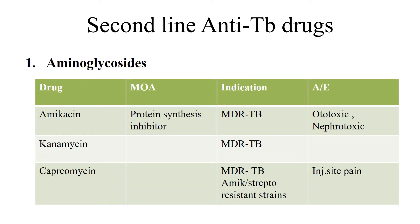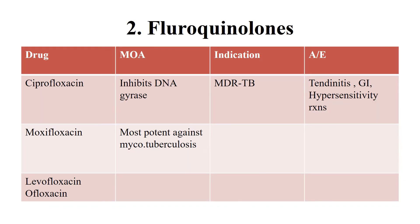Moving on to second-line anti-TB drugs. These drugs are useful when there is resistance to first-line agents, or when first-line agents are contraindicated or not tolerated. The first group is aminoglycosides — the remaining aminoglycosides beyond streptomycin, such as amikacin, kanamycin, and capreomycin, are all bacterial protein synthesis inhibitors. Their main indication in TB is multi-drug-resistant TB. Capreomycin can be effective in strains where amikacin or streptomycin resistance is seen.